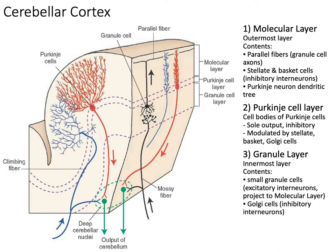In the molecular layer we also have parallel fibers — these come from the granule cells and travel upwards toward the molecular layer, where they are sampled by the dendrites of the Purkinje cells. This granule cell with its parallel fiber is the input to the cerebellum, telling it what is going on. The Purkinje cell layer is where the cell bodies of the Purkinje cells are located — they line up quite nicely. The Purkinje cells are the only output of the cerebellum, and as mentioned, they are inhibitory.